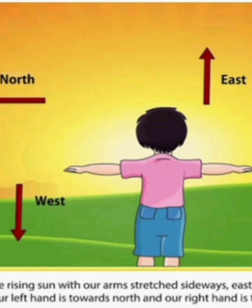Just stand looking at the rising sun and note the four directions. So children, there are four directions: east, west, north, and south.